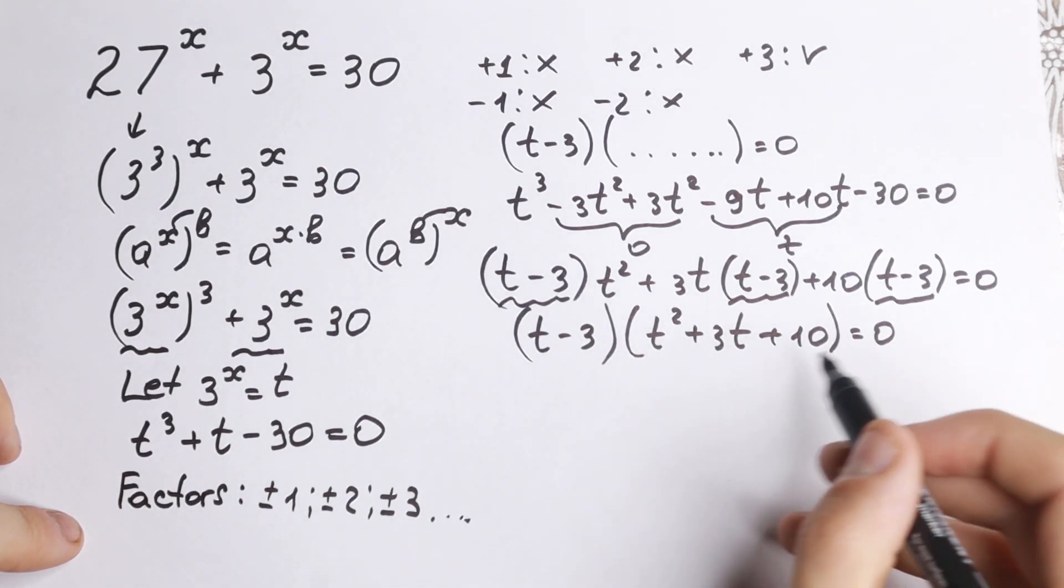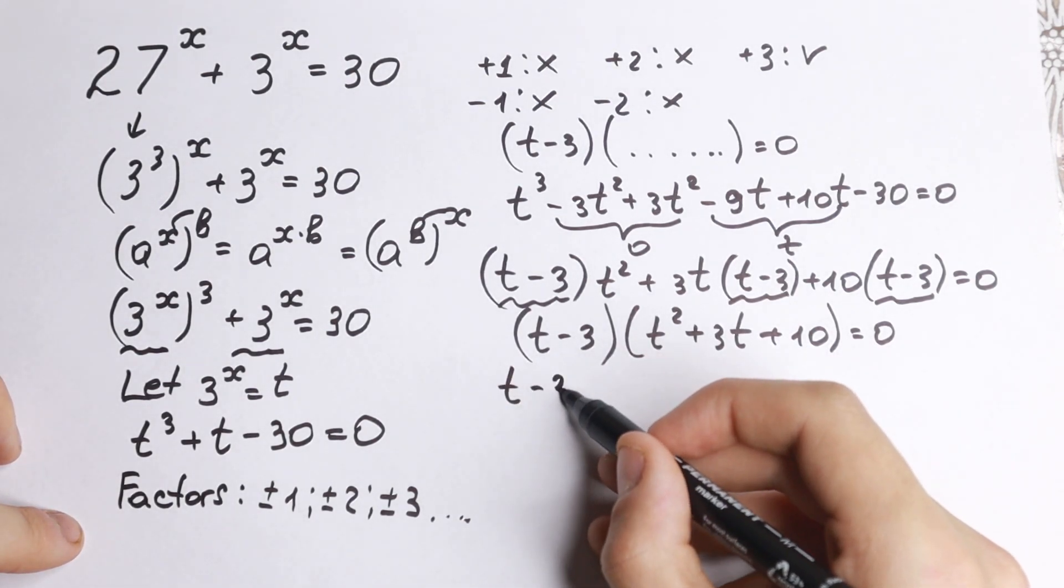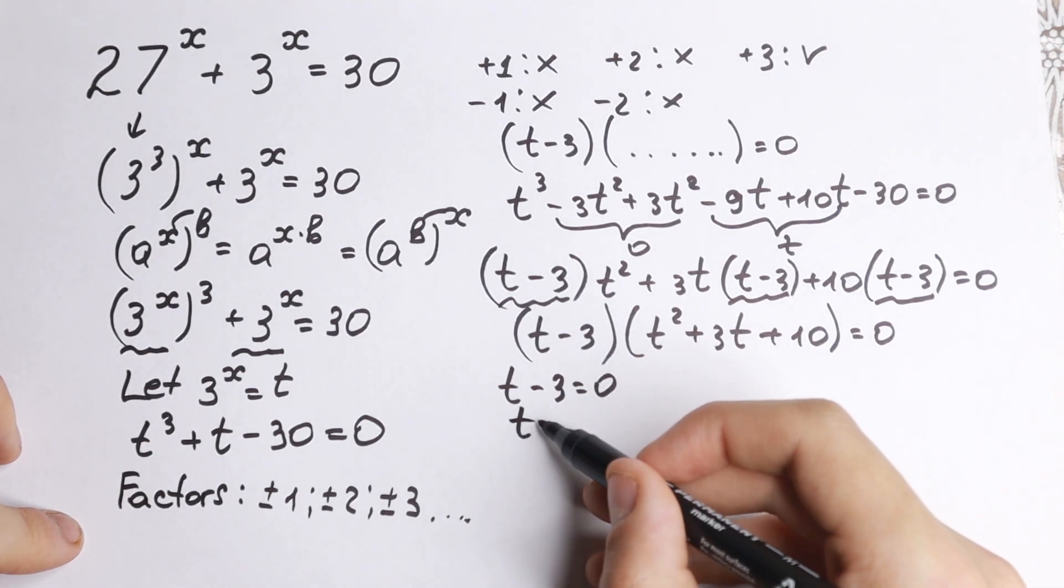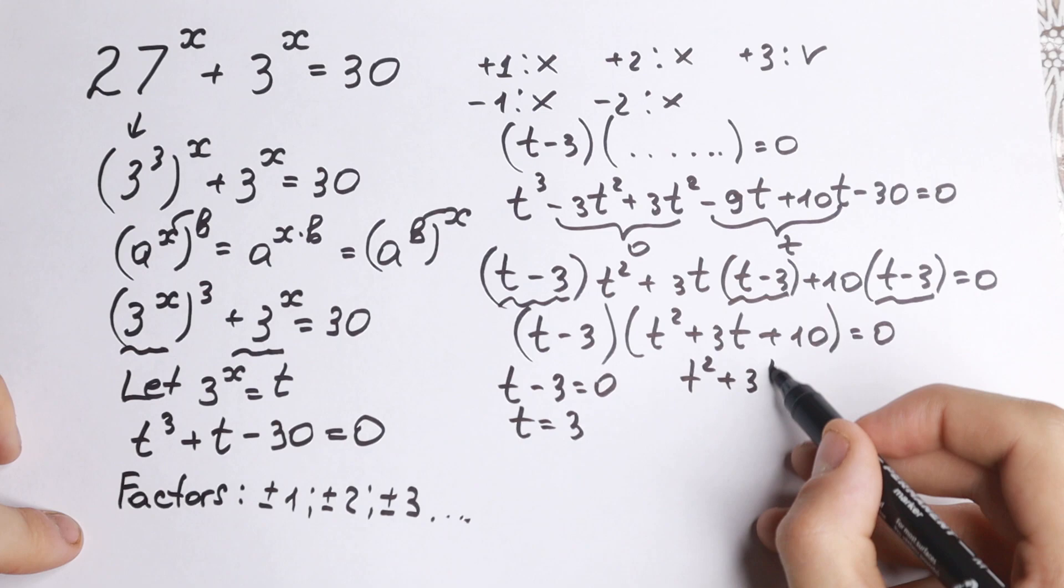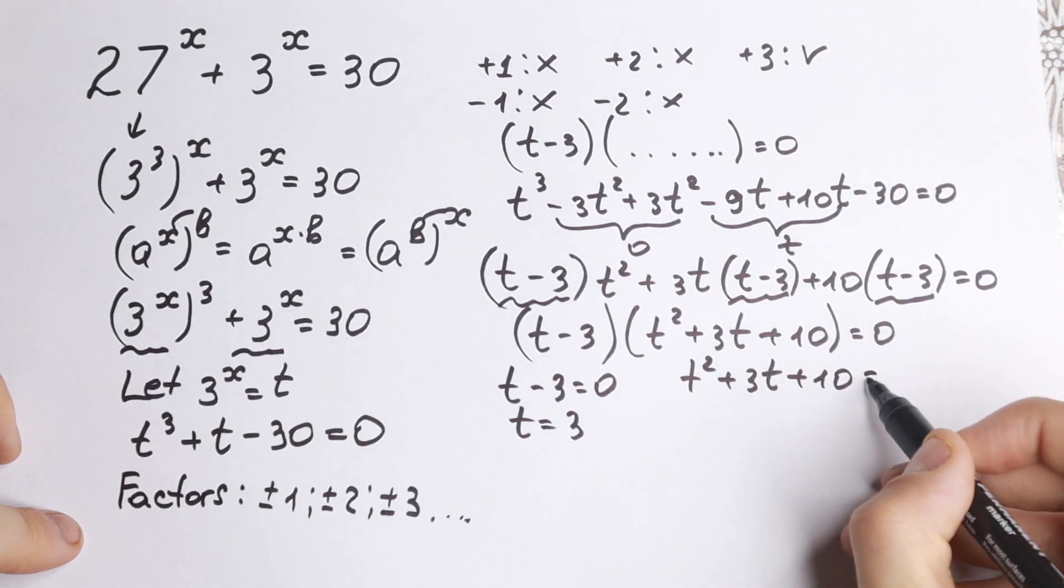So we have a product. Product equal to 0 when t minus 3 equal to 0. From here, t equal to 3. And the second equation: t square plus 3t plus 10 equal to 0.